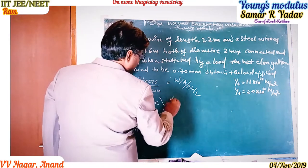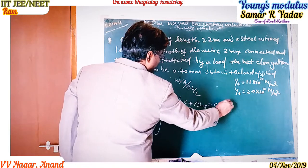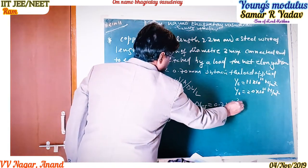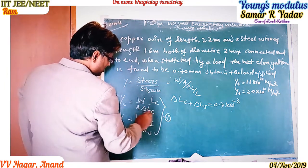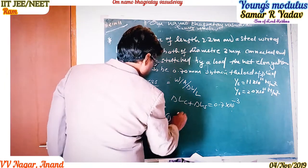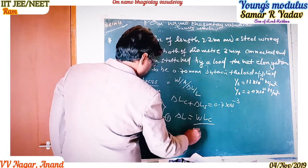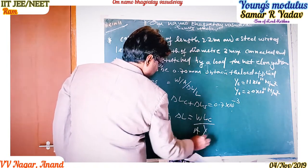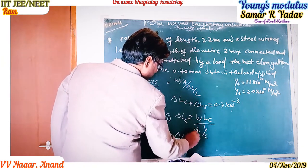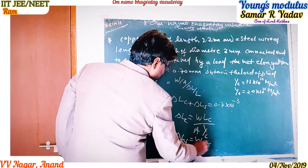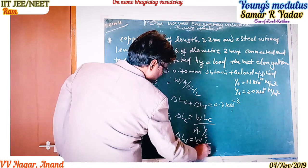We are given that delta L_c plus delta L_s equals 0.7 mm. We need to find delta L_c. From the formula, delta L_c equals W into L_c upon A into Y_c. Similarly, delta L_s equals W into L_s upon A into Y_s.